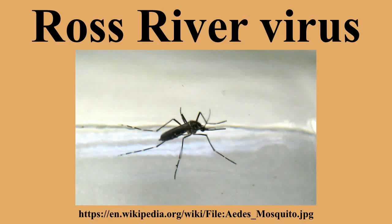History: In 1928, an outbreak of acute febrile arthritis was recorded in Narrandera and Hay in New South Wales, Australia. In 1943, several outbreaks of arthralgia and arthritis were described in the Northern Territory, Queensland, and the Shoalwater Islands off the northern coast of Papua New Guinea. The name epidemic polyarthritis was coined for this disease.